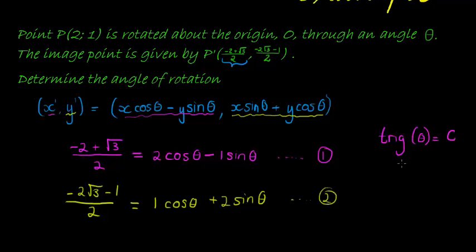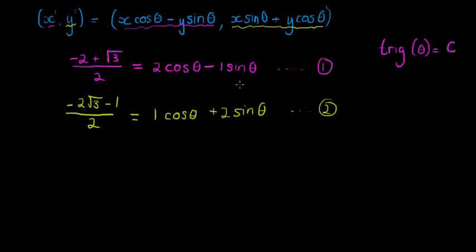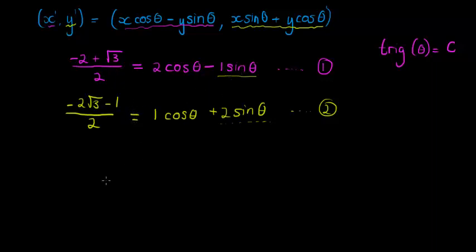Now you can choose whichever approach you want. Either get rid of the sine and keep an expression with cos, or vice versa. I prefer working with cos, so I'm going to get rid of the sine. In equation 1, I have one sine subtracted, and in equation 2, I have two positive sines. So I'll multiply everything in equation 1 by 2, giving me two sines, and then add the two equations together.